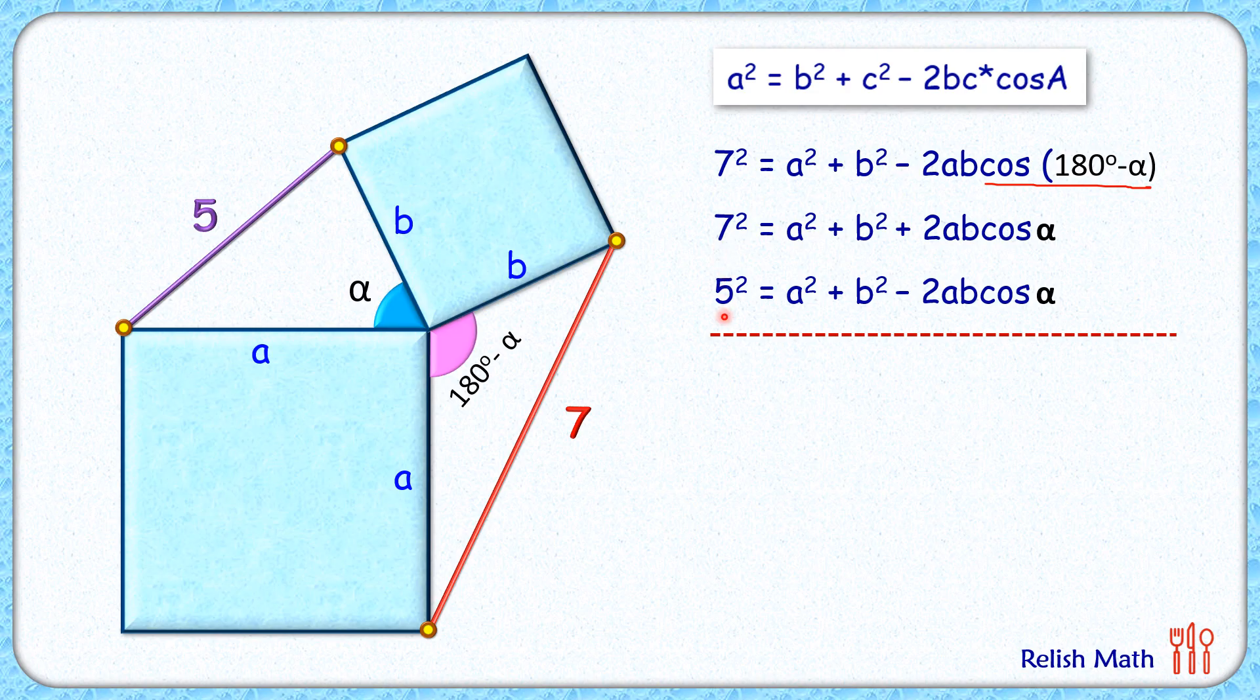So we'll get the left-hand side will be 7² + 5², and on the right-hand side we'll find that this plus and minus are getting cancelled, so the right-hand side will be 2 times (a² + b²).